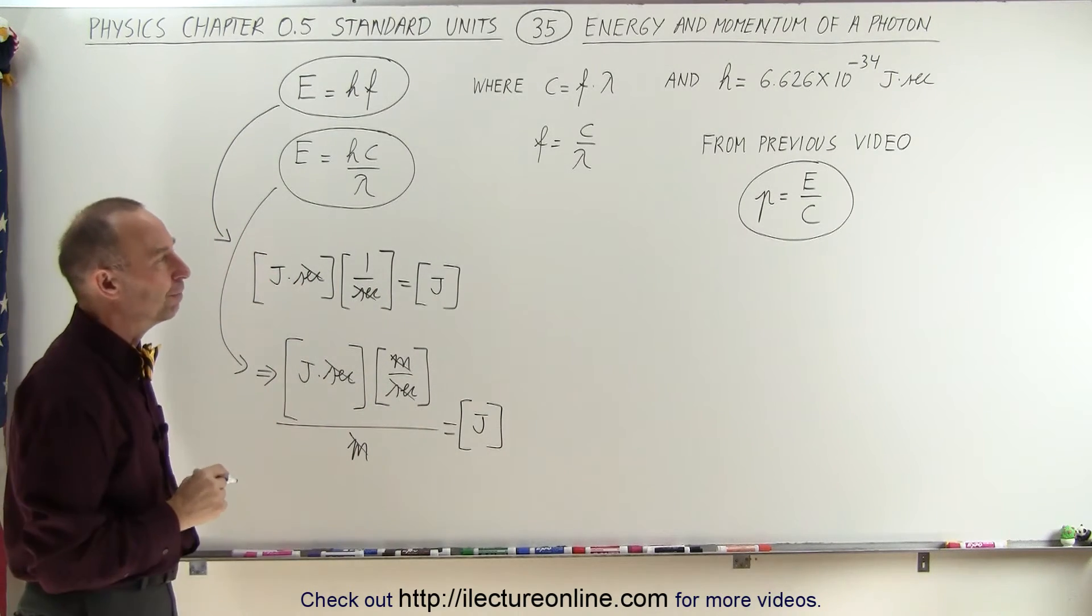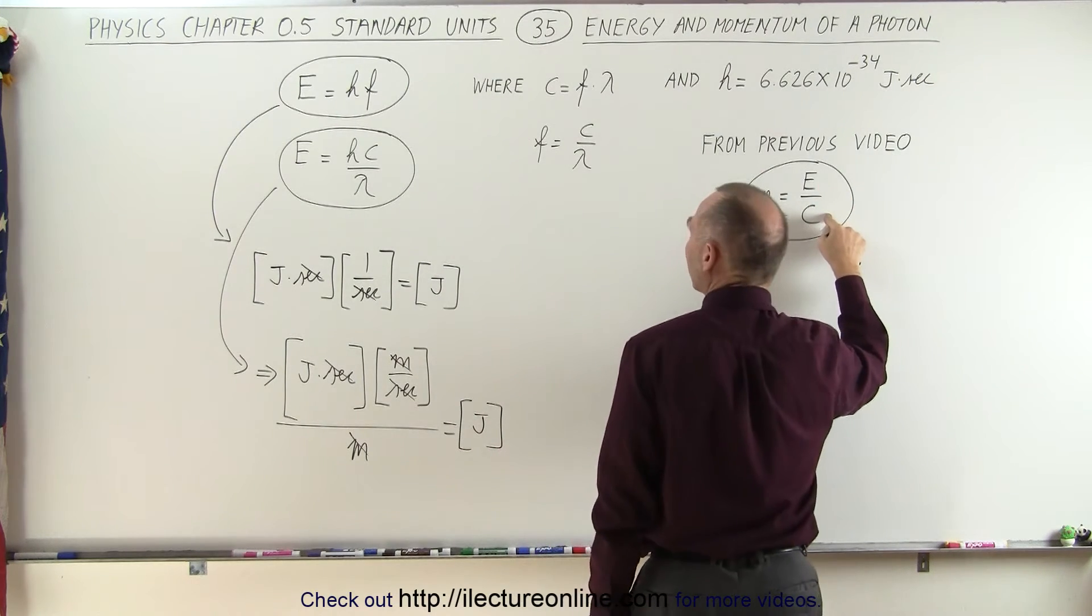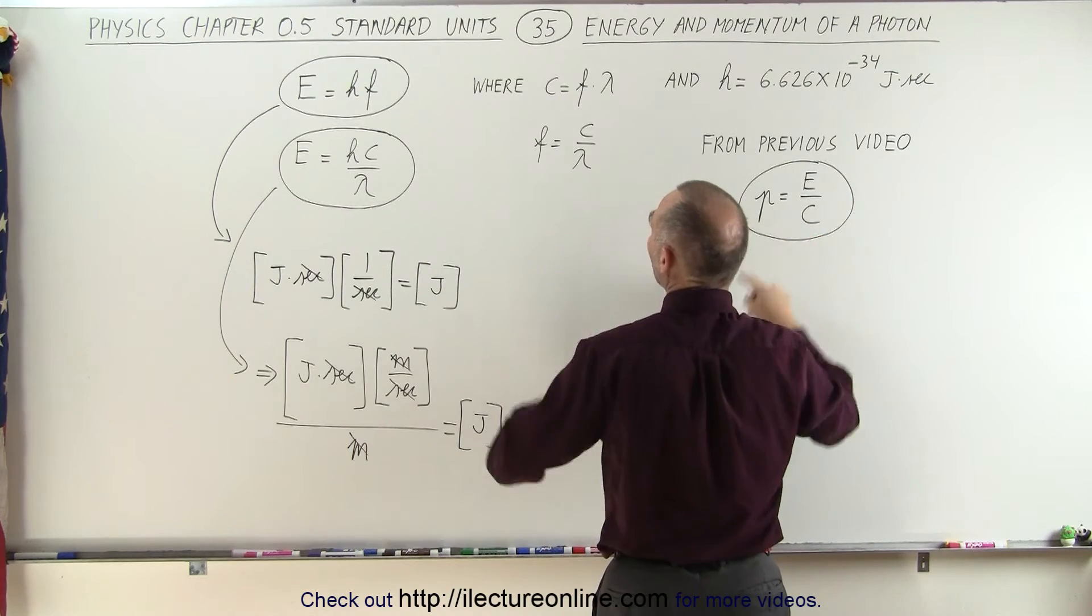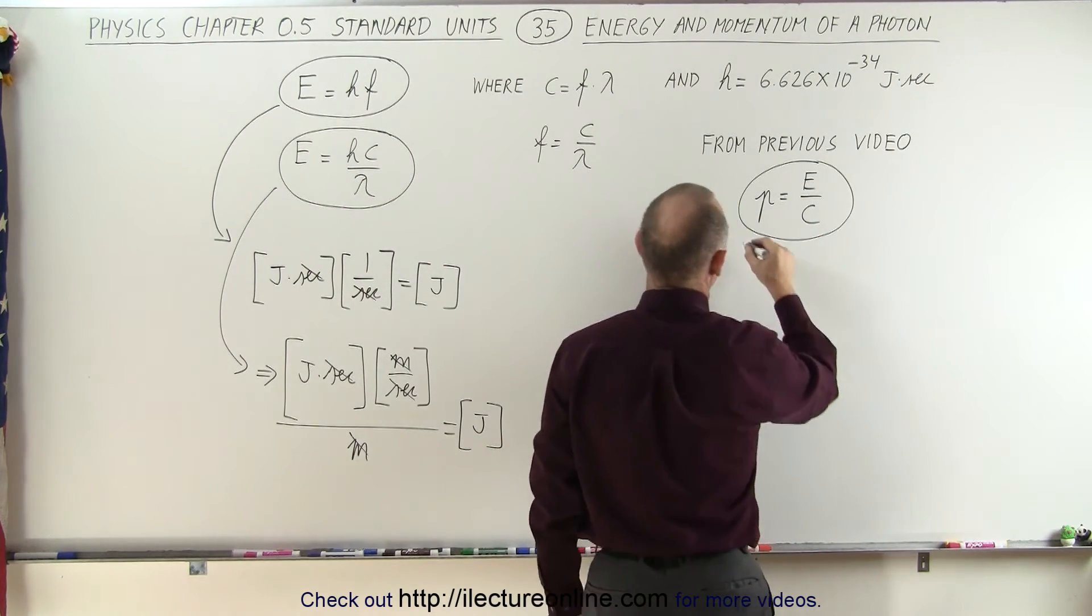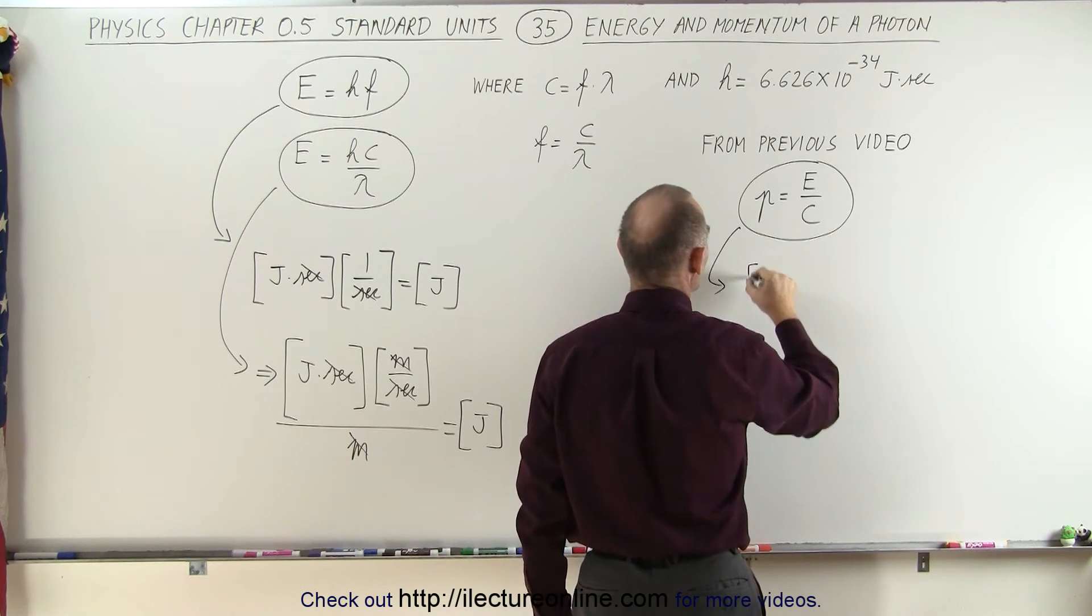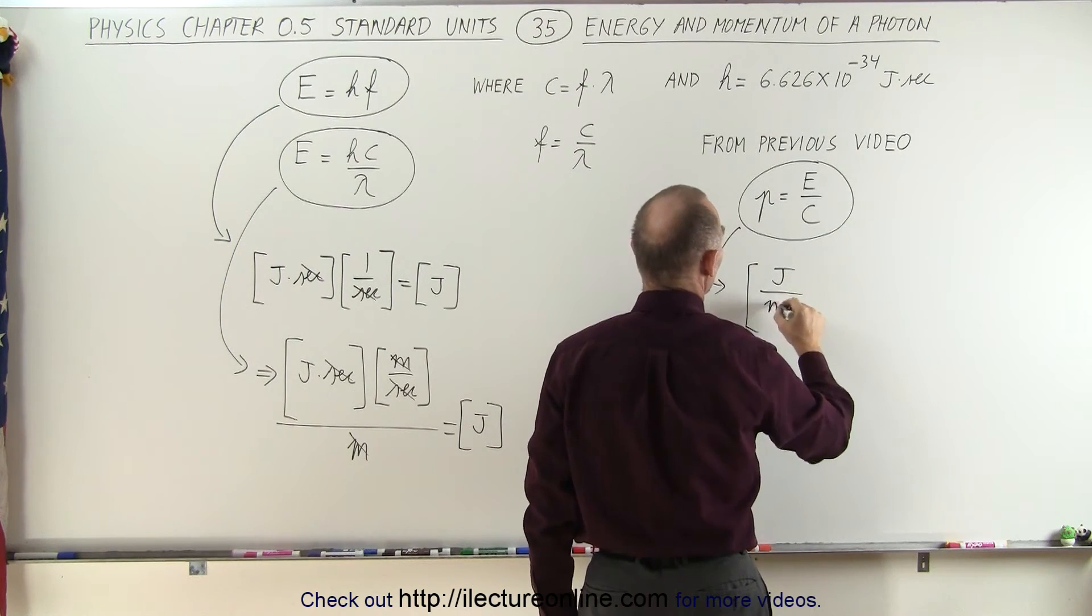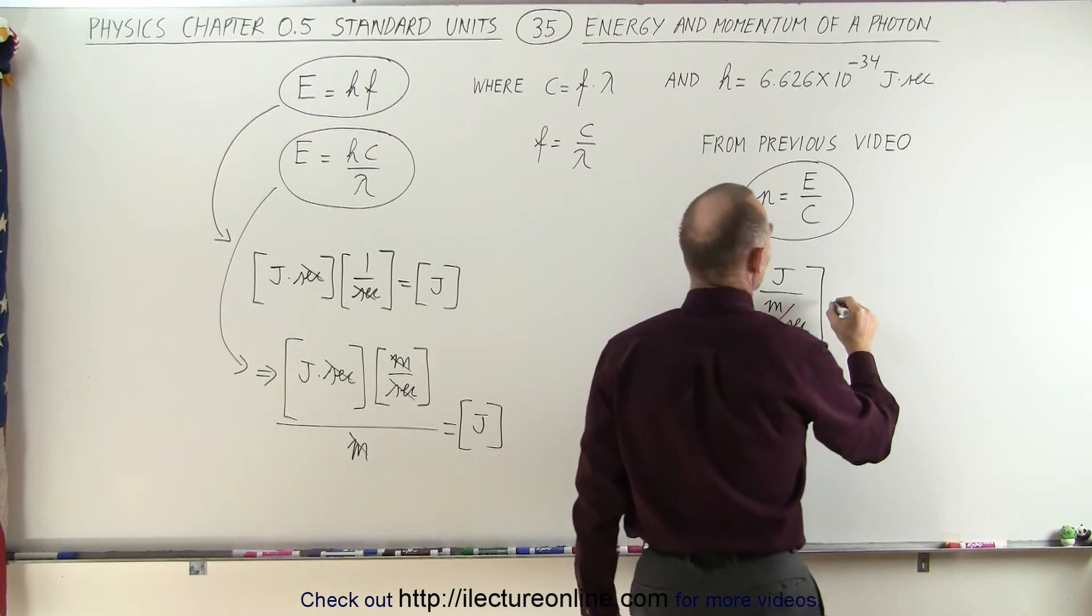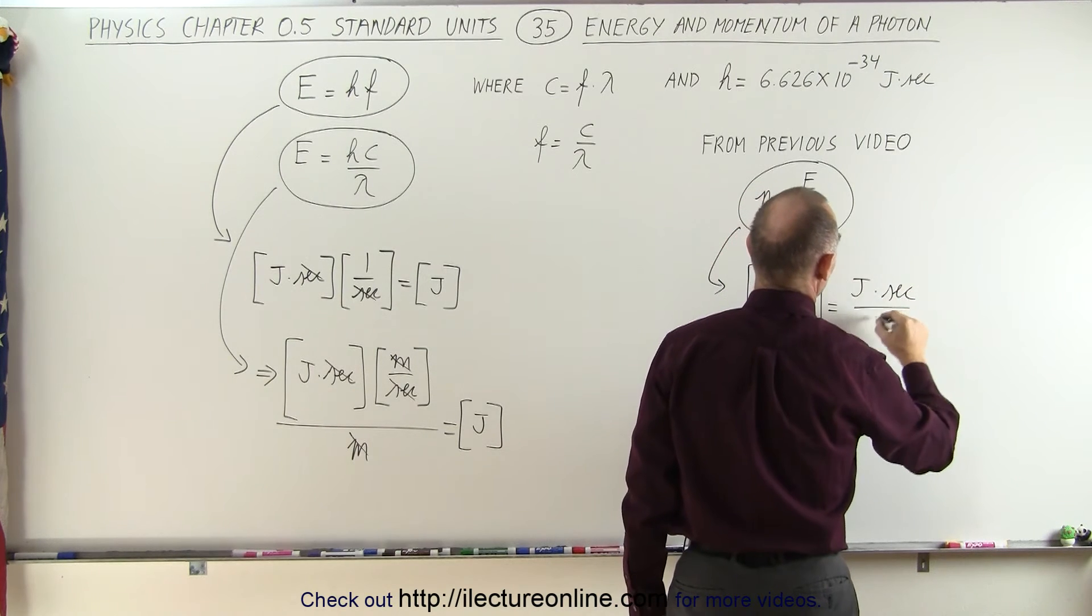Now what about momentum? Well, momentum is equal to the energy divided by the speed of light, according to the equation that we saw in the previous video. We note that the energy now converges to the units of joules. So when we write this in terms of units, we get joules divided by the speed of light, so that would be meters per second, which means that this is equal to joules times seconds divided by meters.